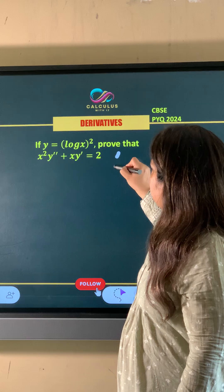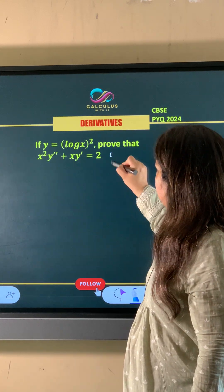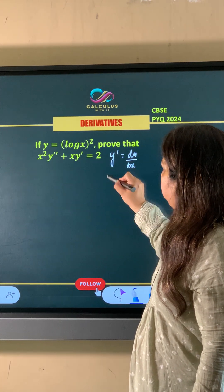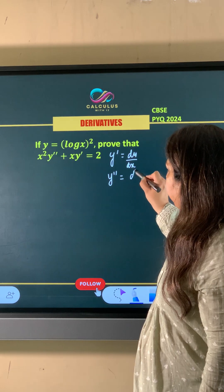Where Y dash is first order derivative, to Y dash is DY by DX and Y double dash means second order derivative.